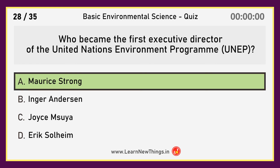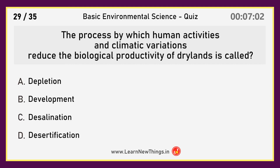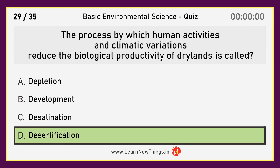Maurice Strong. The process by which human activities and climatic variations reduce the biological productivity of dry lands is called desertification.